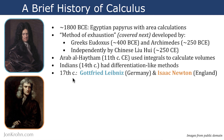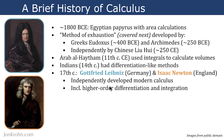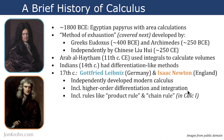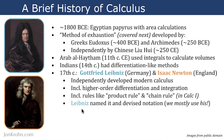By the 17th century, Gottfried Leibniz in Germany and Sir Isaac Newton in England independently developed modern calculus. This includes higher-order differentiation and integration techniques, as well as rules like the product rule and the chain rule, which are covered in Calculus 1. Leibniz named calculus and devised a notation for it — we'll mostly use his, as it's the preferred one here.